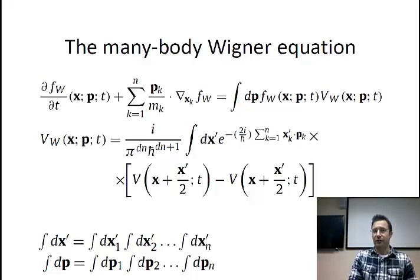The many-body Wigner equation is this equation that you have on the top of this slide, where you have in particular this V_W, which is called the kernel, or the Wigner kernel of the equation. In particular, you should note that this N here is an integer number, which is the number of particles that are involved.